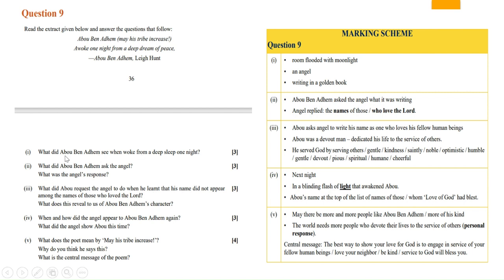Let's discuss one by one. What did Abu Ben Adhem see when he woke up from a deep sleep one night? This is the three-mark question. These are the three main points. First of all, Abu Ben Adhem has seen a room flooded with moonlight. The other one was an angel. He was writing in a golden book.